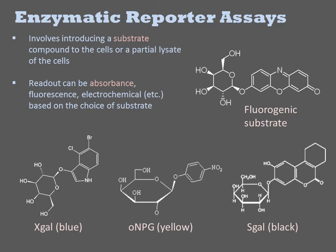Different substrates are read out in different ways. For bulk absorbance measurements using a spectrophotometer, orthonitrophenol-based substrates are usually the best. For visual readout on colonies in a plate, the insoluble products X-gal and S-gal are best. For cytometers, fluorometers, or microscopy, the fluorogenic substrates are required. Additionally, there are substrates for these enzymes that change electrochemical properties upon hydrolysis, allowing detection with electrodes.